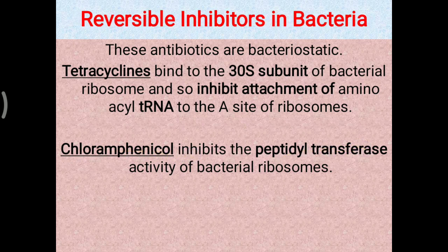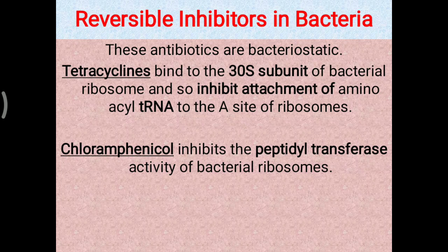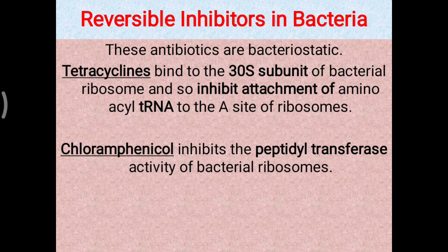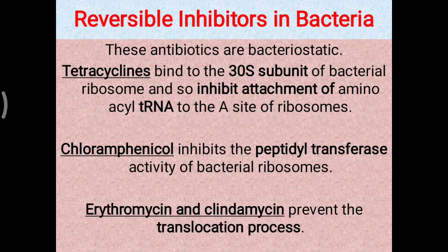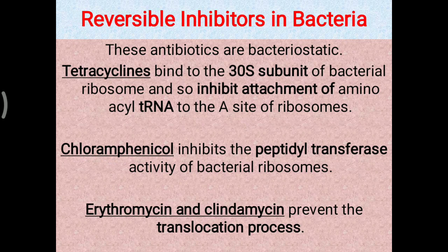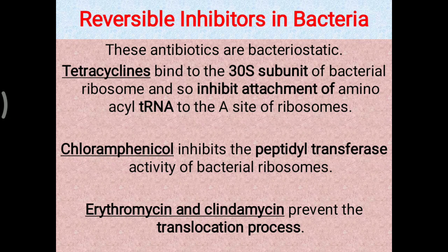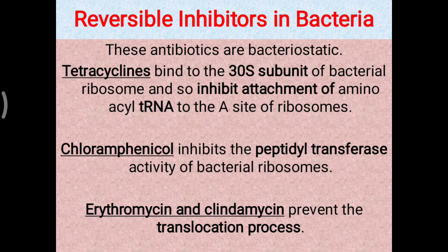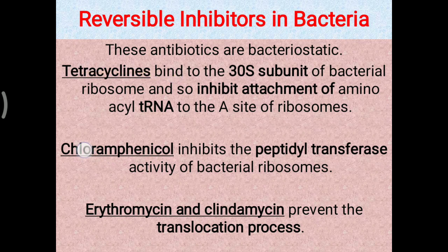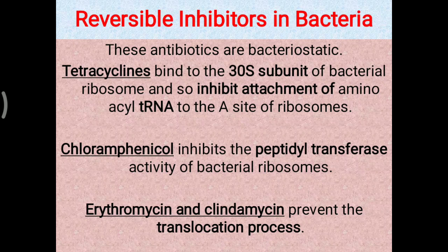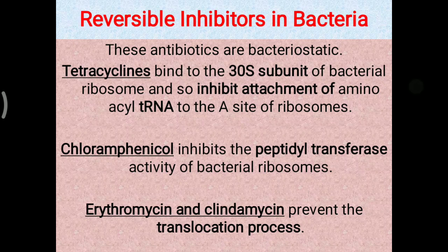Chloramphenicol inhibits the peptidyl transferase activity of the bacterial ribosome, so further protein formation will be stopped — chloramphenicol also works as a bacteriostatic. Erythromycin and clindamycin prevent the translocation process, which is also a critical step in translation. So tetracycline, chloramphenicol, erythromycin, and clindamycin are all able to stop protein formation and work as bacteriostatic antibiotics.